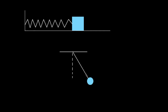Another common example is a pendulum — a mass connected to a string. You pull the mass back and it swings back and forth. So you've got something going back and forth; that's an oscillator. These are the two most common types: masses on springs and pendula, but there are many other examples.